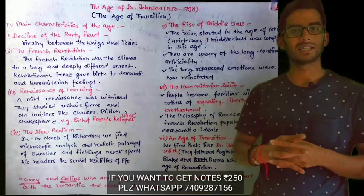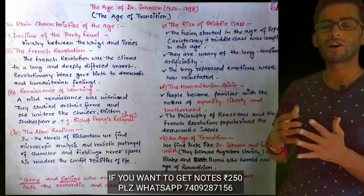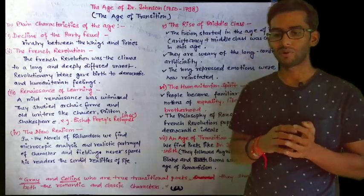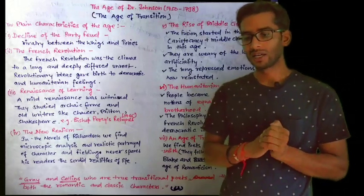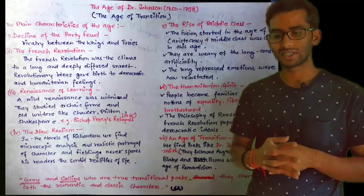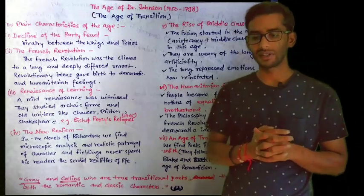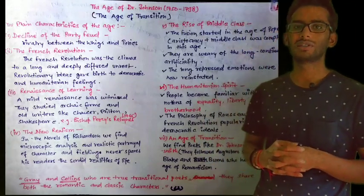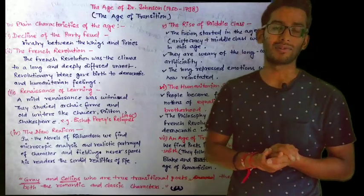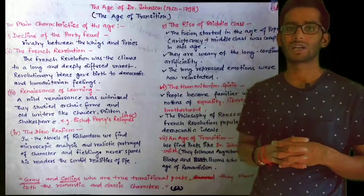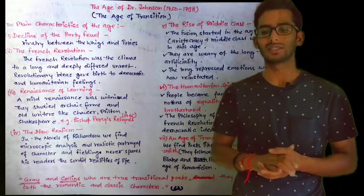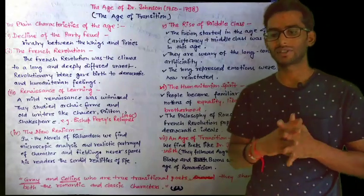The fifth characteristic is the Rise of the Middle Class. This was the time when the middle class was rising. The fusion had started in the Age of Pope — aristocracy plus middle class — and this was completed in this age. The middle class was weary of long-continued artificiality, unlike the Age of Pope where artificiality was prominent, as seen in works like 'The Rape of the Lock.' Writers now picked topics from society to correct its follies.